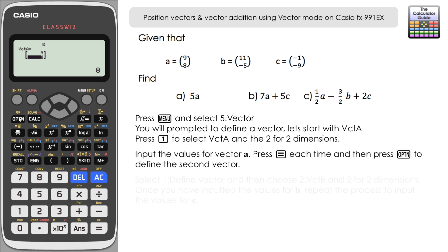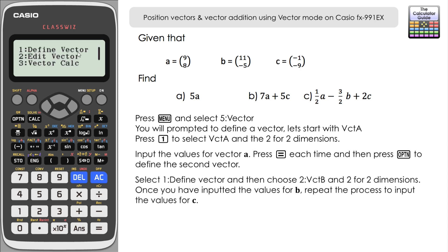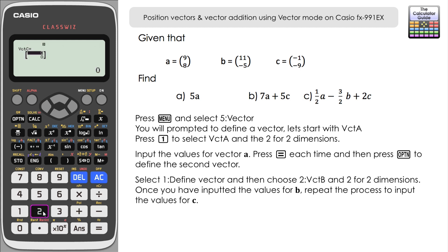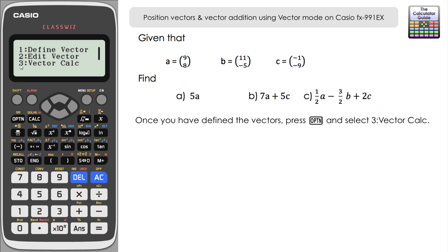Press Option then 1 to define vector. Choose vector B, dimension 2, and input 11 and negative 5, pressing equals. Then press Option and 1 again to define vector C — again 2 dimensions — and input minus 1 and minus 9. All three vectors are now inputted into the calculator. Press Option then 3 for vector calc to do calculations.